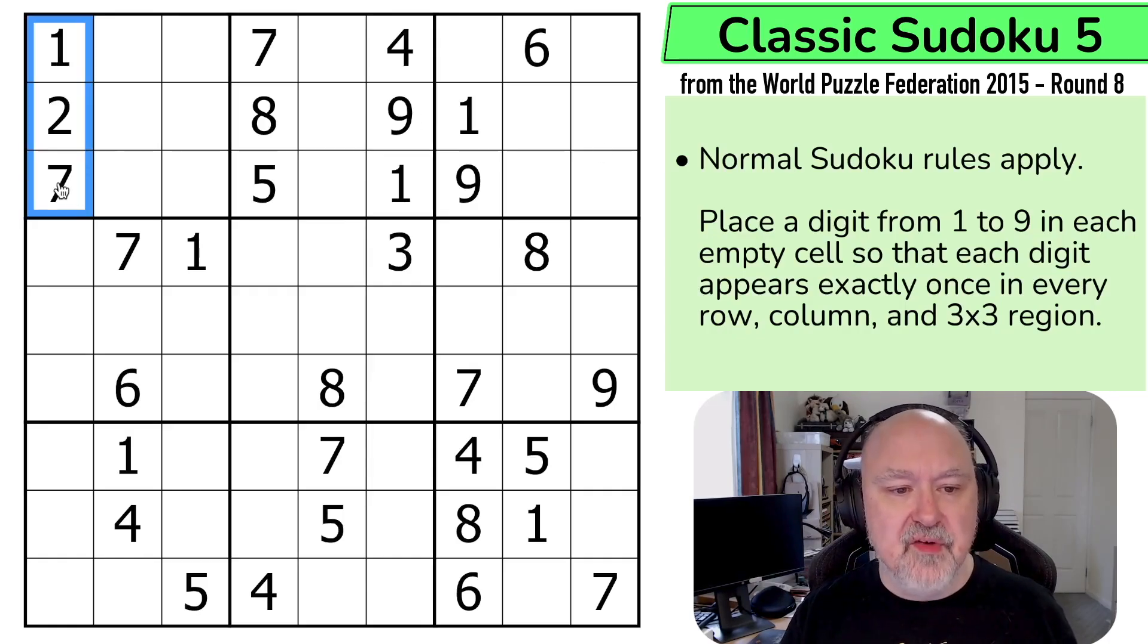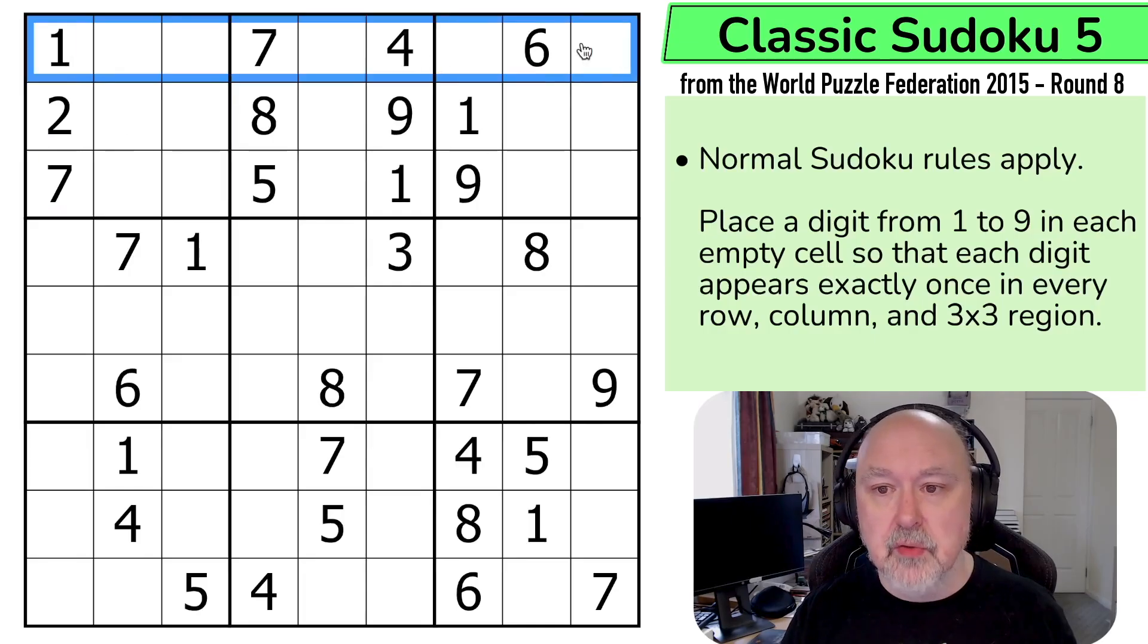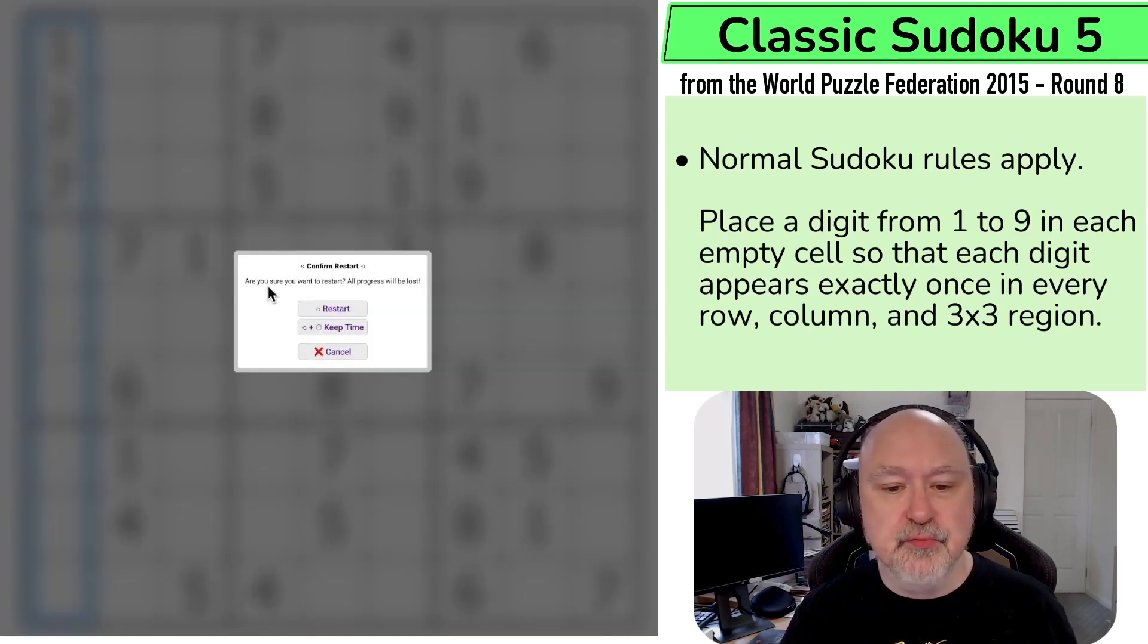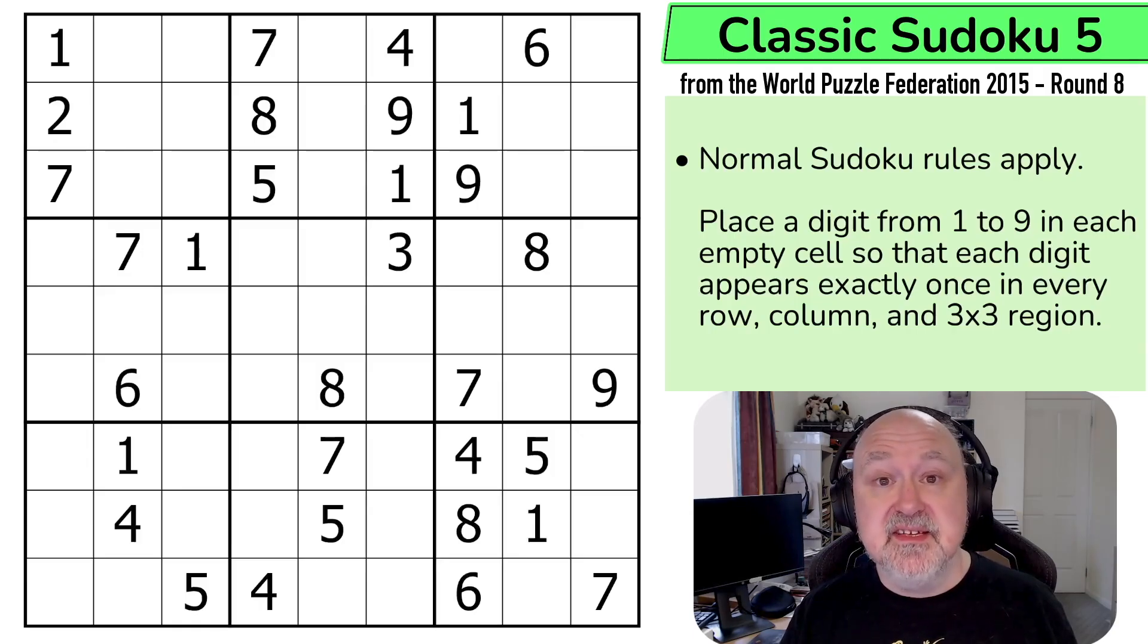So normal Sudoku rules, which means into every box, into every row, and into every column, we have to place the digits 1 through 9 without repetition. That's it. I'm going to restart the puzzle to restart my timer. Let's give this a shot.